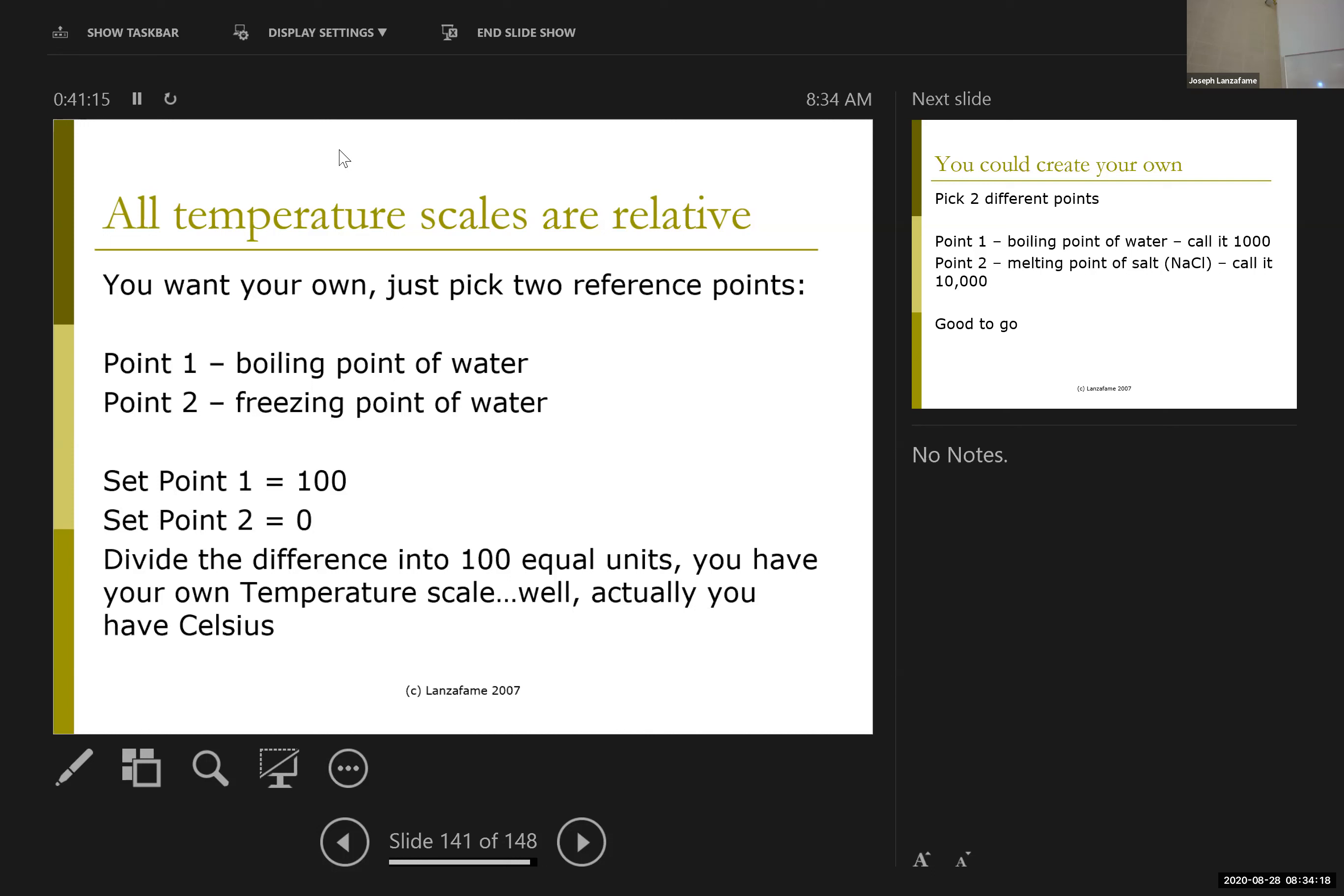But there's no significance to those numbers. It was arbitrarily set up as a scale works just fine. Take your boiling point of water, call it 100, take your freezing point, call it 0, put 100 lines in between. Well, technically 99. And you have a Celsius temperature scale.